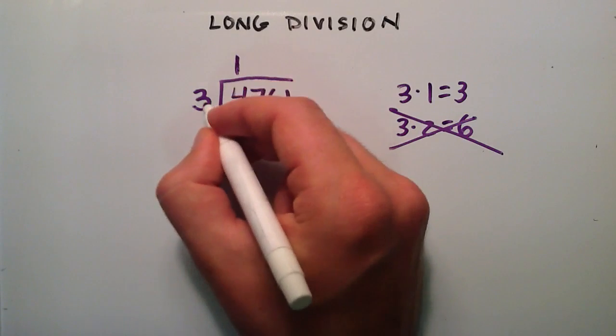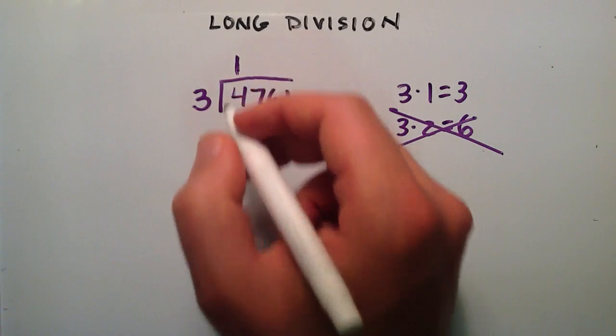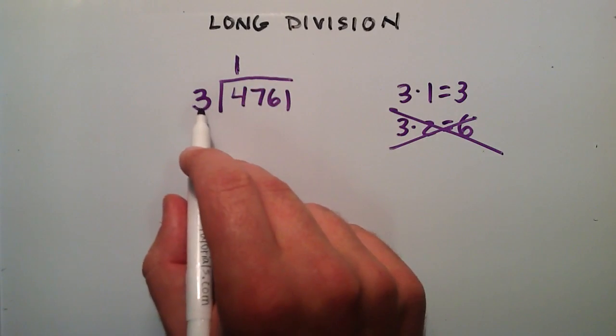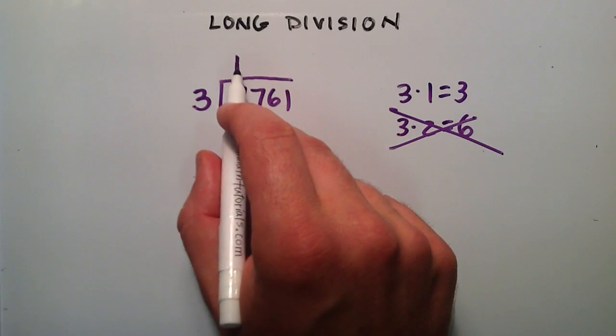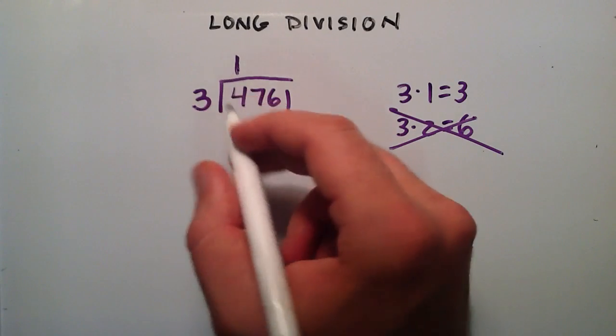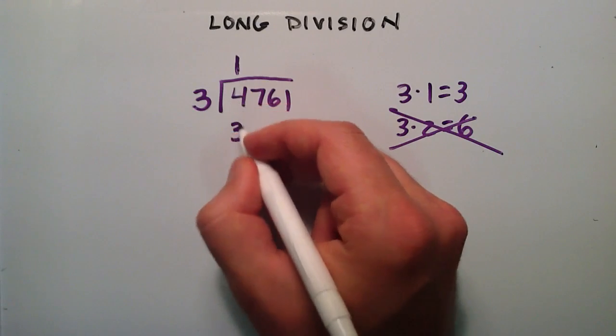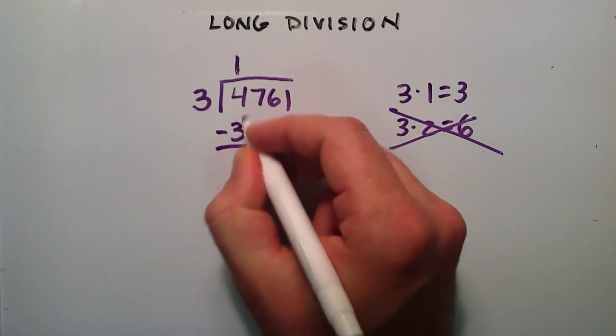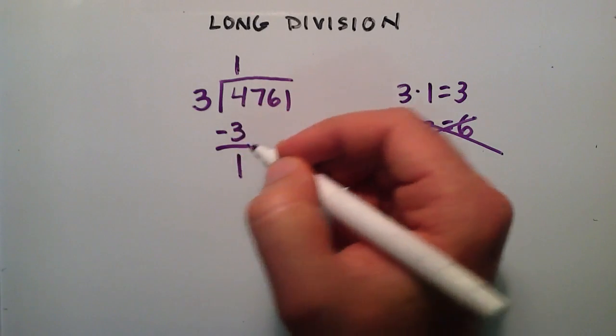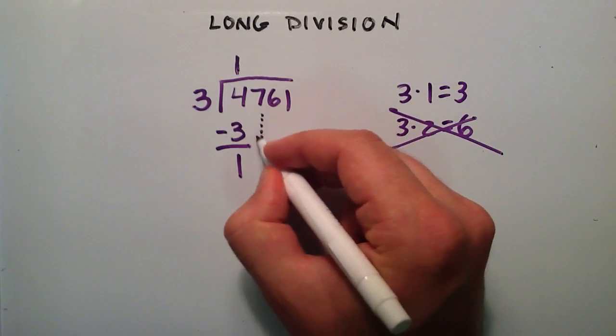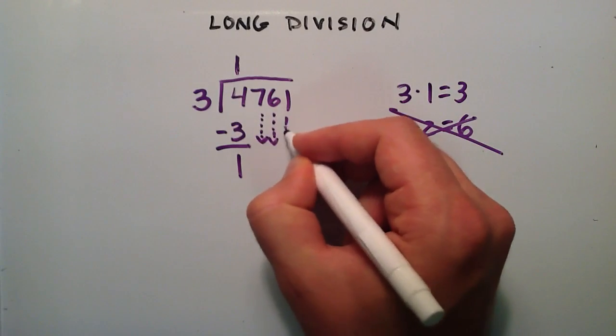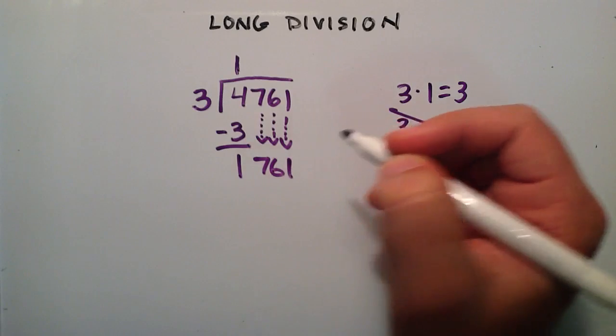That's the biggest number we can multiply 3 by and have a result less than 4. The next step is we take the 3 and multiply it by that number. We multiply 3 by 1 and 3 times 1 gives us 3. And then we take 4 and subtract that 3. So 4 minus 3 gives us 1. And then these numbers right here simply fall down and get rewritten right there.